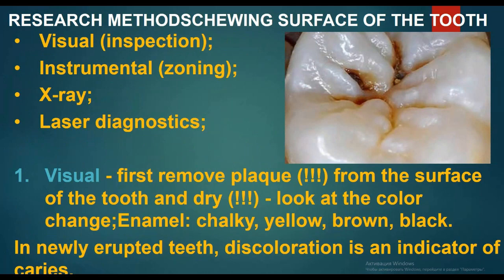The methods for assessing the surface of the tooth include visual inspection, instrumental examination, probing, X-ray, and laser diagnostics. For visual assessment, first remove plaque from the surface of the tooth, dry it, and look for color changes in the enamel — chalky, yellow, brown, and black discolorations.